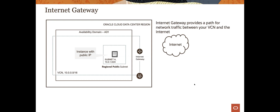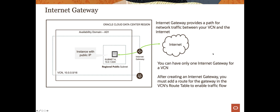The answer is what's called an Internet Gateway — aptly named. It provides a path for traffic back and forth. Importantly, compared to a NAT gateway, the Internet gateway is bidirectional — and by that I mean either side can initiate the traffic. The Internet can initiate a session through the Internet gateway into our subnet and talk to our instance, and our instance can do the same. You can also only have one Internet gateway per VCN.